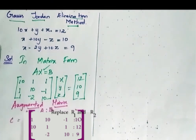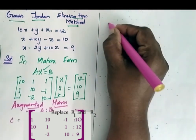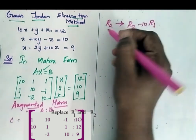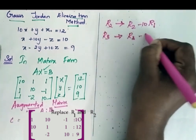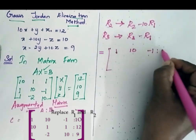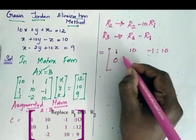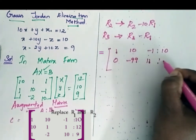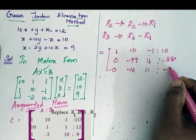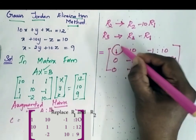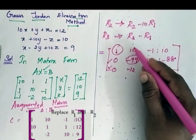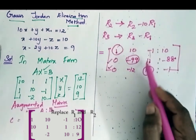Now this augmented matrix has to be simplified. So how I am going for simplification is my R2 is framed by R2 minus 10 R1. Then the next one is my R3. It is by R3 minus R1. So now I get my matrix as 1, 10, minus 1 and here it is 10. Again here it is 0, minus 99, 11 and here it is minus 88. Then here it is 0, minus 12, 11. Here it is minus 1. So now I have obtained 1 in this particular place and all the remaining 0. Now I have to obtain 1 here, another 1 here and all the remaining 0's.